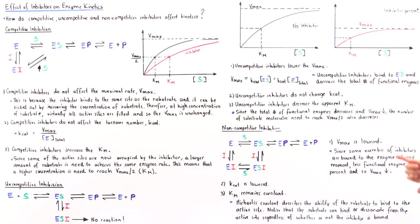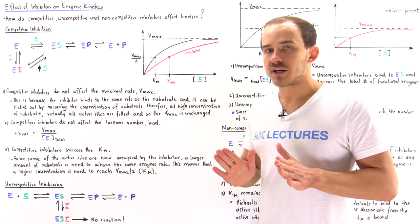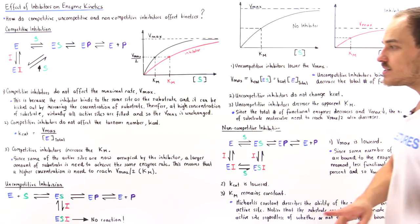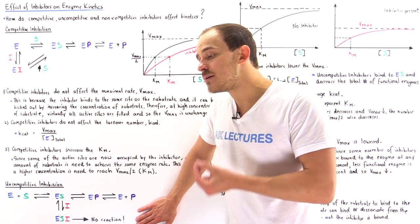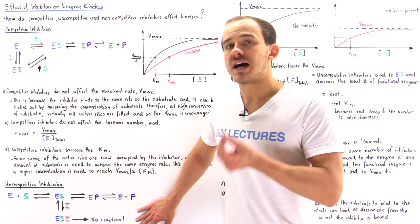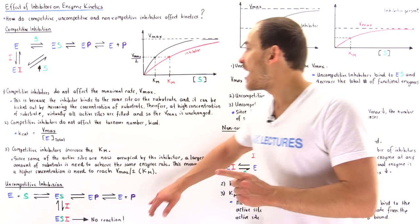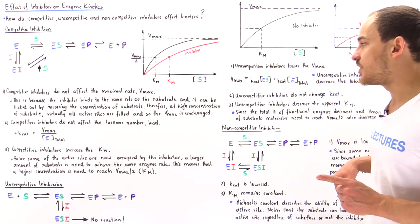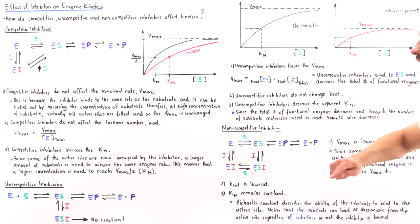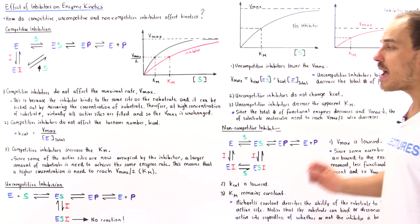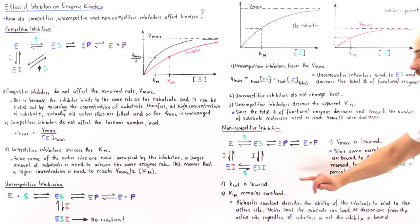Let's begin with point one: Vmax is lowered in non-competitive inhibition, for the same reason Vmax is lowered in uncompetitive inhibition — we decrease the number of active sites and functional enzymes. If we decrease that value, we decrease Vmax. Since some number of inhibitors are bound to the enzyme at any given moment in time and that inhibits the functionality of the enzyme, fewer functional enzymes are present and so Vmax decreases.